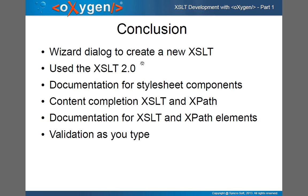To summarize: if you want to create a new stylesheet, you can use the wizard dialog which lets you set the version (1.0, 2.0, or 3.0) and documentation. Oxygen provides documentation for stylesheet components. Content completion for XSLT and XPath helps you edit your stylesheet, along with documentation for XSLT and XPath elements. Validation as you type highlights errors as you create your stylesheet.